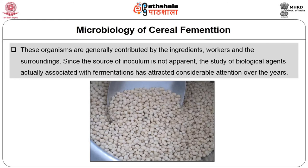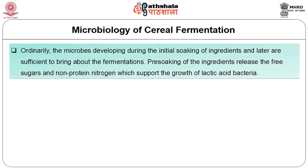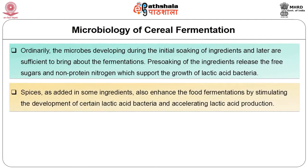De-hulled black gram grains used for the production of various indigenous Indian products have been reported to harbor Leuconostoc mesenteroides and other lactic acid bacteria in large numbers, which play a major role in black gram fermentations. Ordinarily the microbes developing during the initial soaking of ingredients are sufficient to bring about the fermentations. Pre-soaking of the ingredients releases free sugars and non-protein nitrogen sources which support the growth of lactic acid bacteria. Spices added in some ingredients also enhance food fermentations by stimulating certain lactic acid bacteria and accelerating lactic acid production.